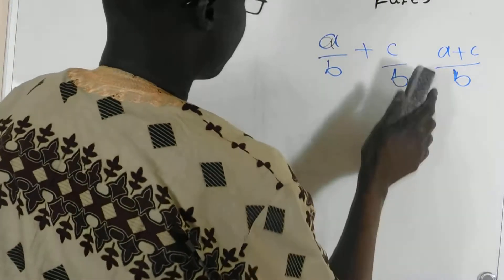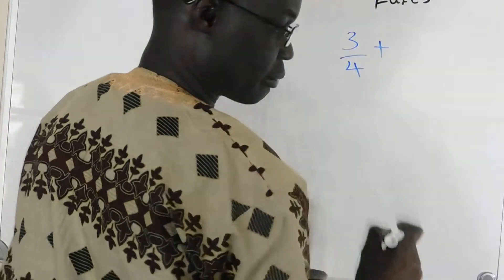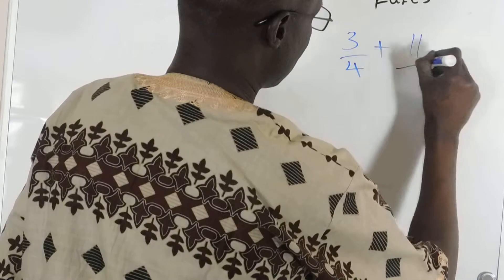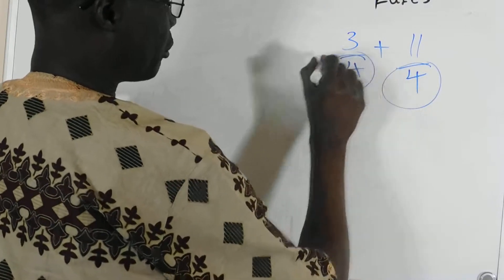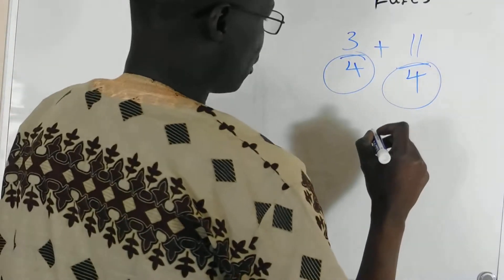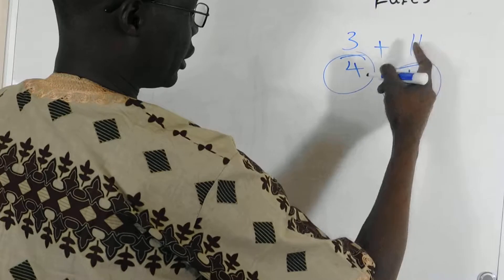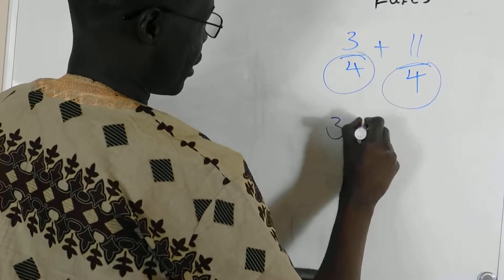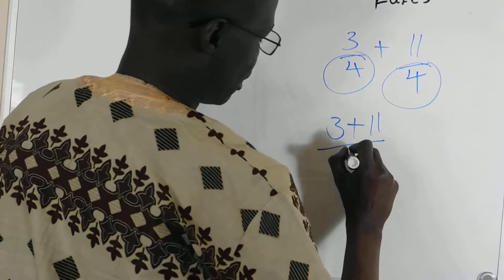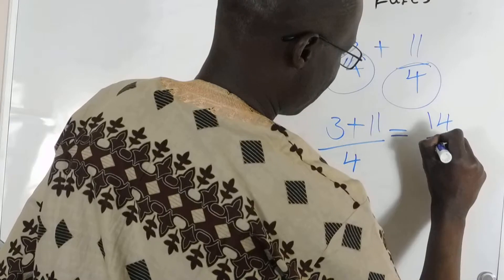So, I have 3 over 4 plus 11 over 4. And because we have the 4, it's the same number in those, so we, like we said, this is A and this is C, so we should have 3 plus 11 over 4.